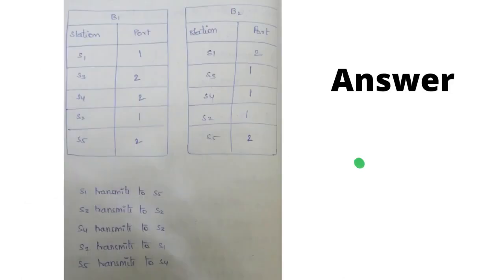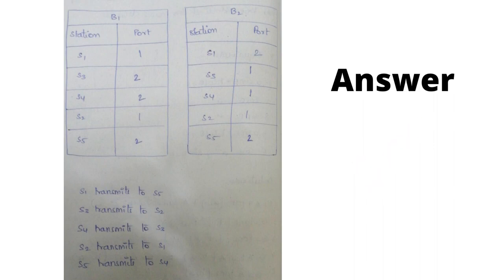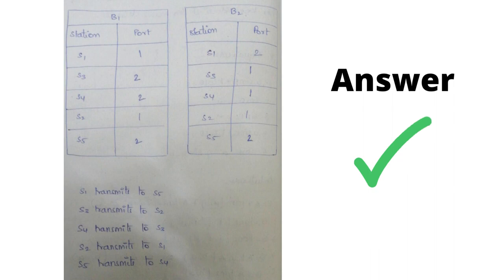Below are the requirements of the question. The part A requirements — the figure below shows a subnet. The first four columns of part B show the delay vector received from the neighbors of router J. Suppose that J has measured its delay to its neighbors A, I, H, and K as 8, 10, 12, and 16 milliseconds. This is the question — you can read it out by yourself. The answers to the question are given in table format. We have stated it already. There are tables.